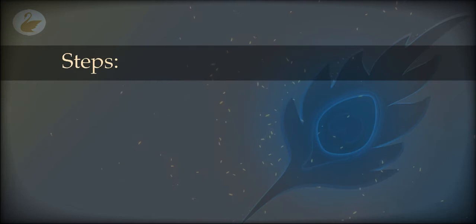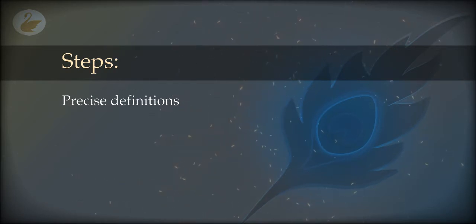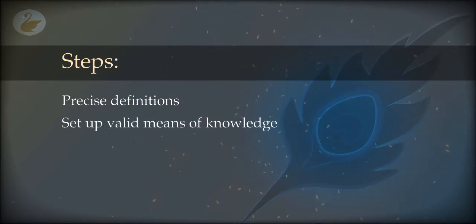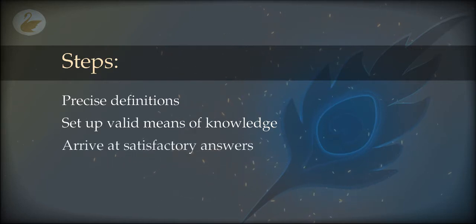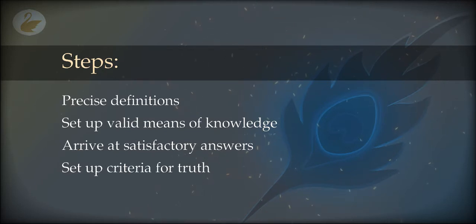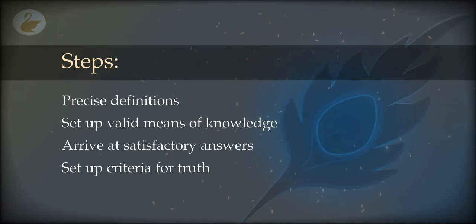As a first step we define all these terms that we are going to use, and to find answers we need some valid means of knowledge. Then we define the valid means of knowledge and arrive at some answers that are most satisfactory. We define what is true and what is false and arrive at that through the means of knowledge. So this will be the start of the path of knowledge, using the means of knowledge and a suitable criteria for truth.